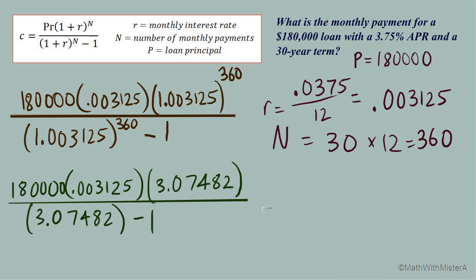Next let's take care of the numerator which is just multiplication so we're going to multiply these numbers right through. 180,000 times 0.003125 times 3.07482, I get 1729.5865 in the denominator. 3.07482 minus 1 takes us down to 2.07482.